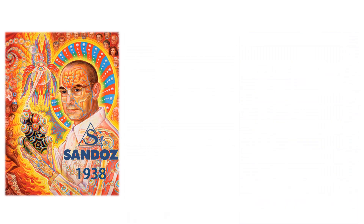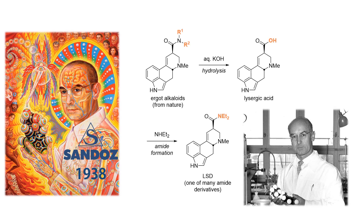There are plenty of resources on the history of LSD, both objectively documented ones and ones that are romanticized by hippies. The short version is the following: Swiss chemist Albert Hoffmann prepared LSD for the first time semi-synthetically in 1938 at Sandoz. Semi-synthetically means that he modified natural products from grain fungi that can be isolated from nature and prepared different analogs thereof.